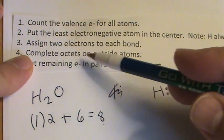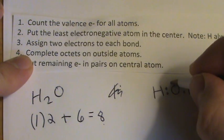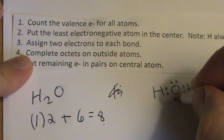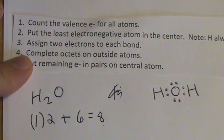Then complete the octets on the outside atoms. We're talking here because oxygen needs eight. Hydrogen needs two, but it already has two. So I've completed the octets and used up all my electrons here.